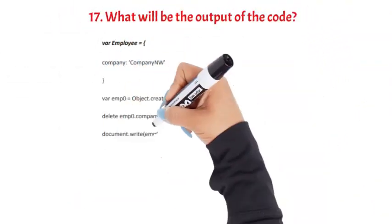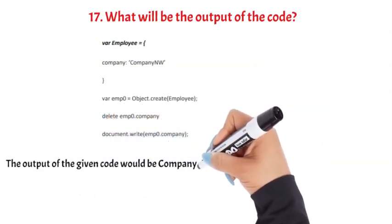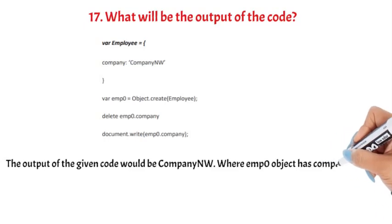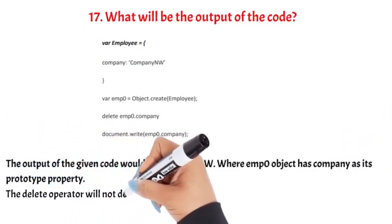Question 17: What will be the output of the code? The output of the given code would be CompanyNV, where emp0 object has company as its prototype property. The delete operator will not delete prototype property.